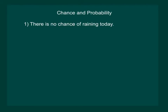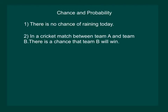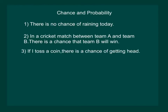For example, we often use phrases like: there is no chance of raining today, or in a cricket match between team A and team B, there is a chance that team B will win. Or sometimes we say, if I toss a coin, there is a chance of getting heads and winning the toss.